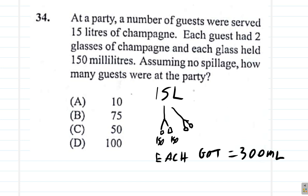Now since we're using milliliters for each guest, let's convert the total to milliliters. 15 liters is equal to how many milliliters? 15,000 milliliters. All right, now.